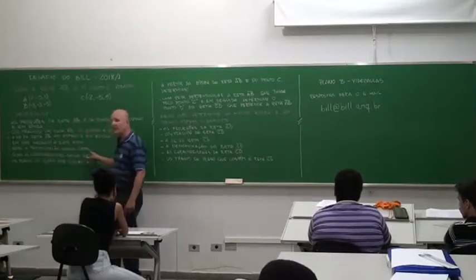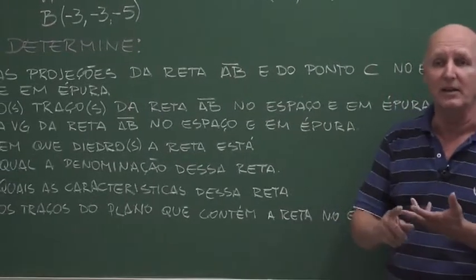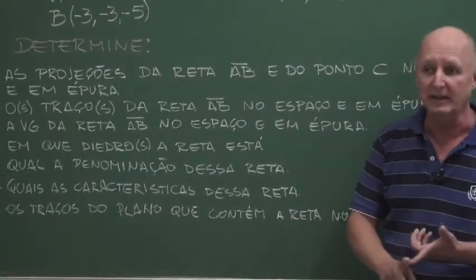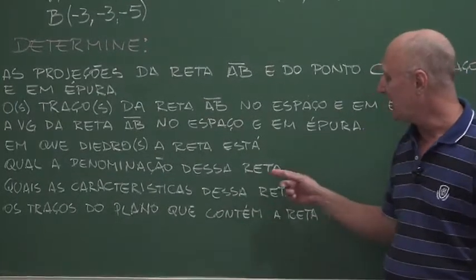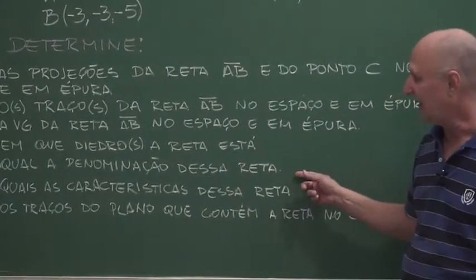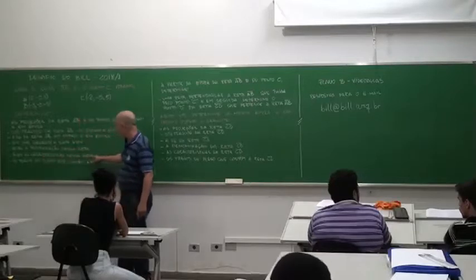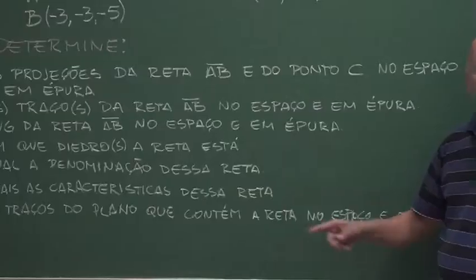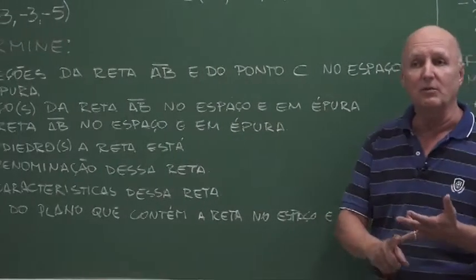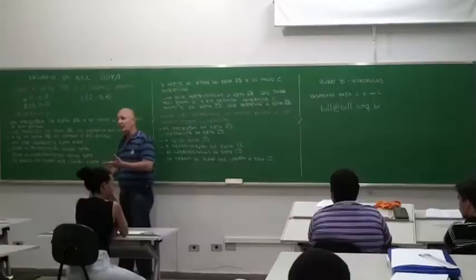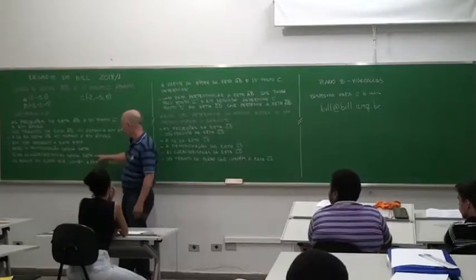Then, what is the name of this line? If it is a topo, if it is a qualquer, if it is a profile, if it is a frontal, horizontal — you will tell me what type of line this is. What are the characteristics of this line? If it is perpendicular to a plane of projection, oblique to another, or parallel to the two.